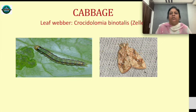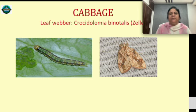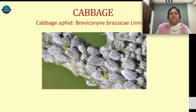Leafweb — Crocidolomia pavonana. I would like to advise you on cabbage: if you have this pest, Bt works, but there are options better than Bt for Lepidopteran insects. This biocontrol agent has a special effect — it is more effective than Bt against Lepidopteran insects.